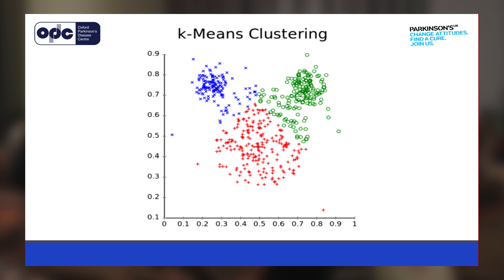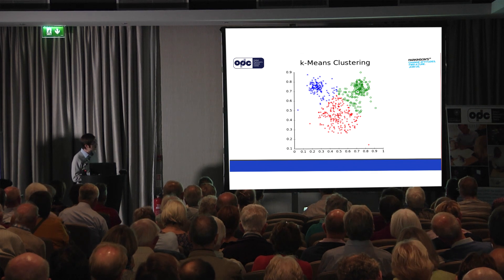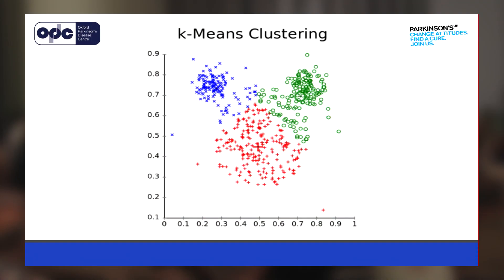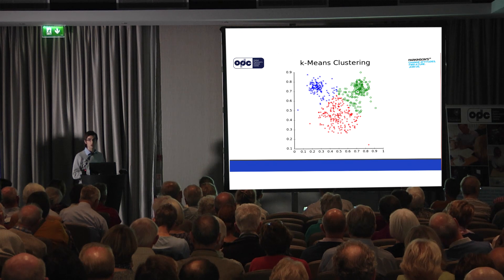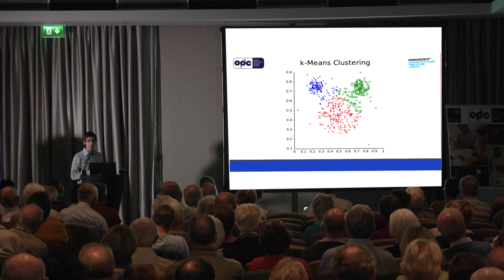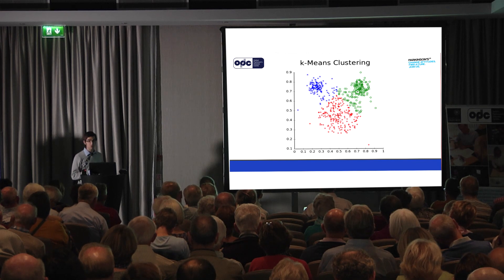Being a statistician, I couldn't go away without giving you a little flavour of how this data-driven method works. We used something called k-means clustering. Here we've got two continuous variables going between zero and one, and we found three clusters — all the red dots are closest to the centroid of the red distribution, and similarly for blues and greens. In our latest paper, we were working in 12-dimensional space, which I'm reliably informed means we're working in larger dimensional space than Doctor Who and the TARDIS.